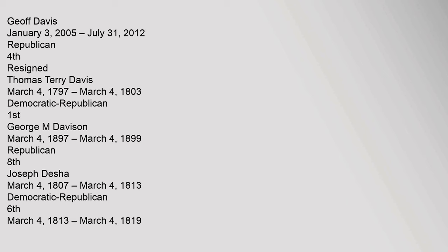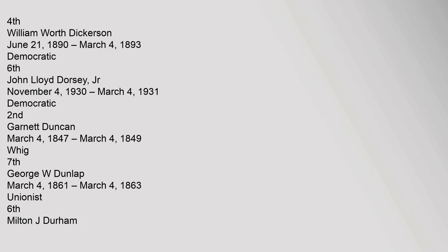Joseph Desha, March 4, 1807 to March 4, 1813, Democratic Republican, 6th; March 4, 1813 to March 4, 1819, 4th. William Worth Dickerson, June 21, 1890 to March 4, 1893, Democratic, 6th. John Lloyd Dorsey Jr., November 4, 1930 to March 4, 1931, Democratic, 2nd. Garnett Duncan, March 4, 1847 to March 4, 1849, Whig, 7th.